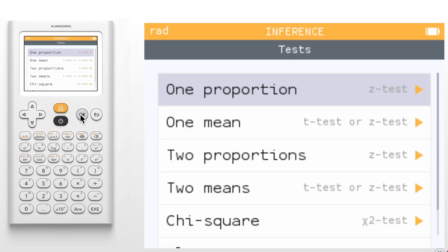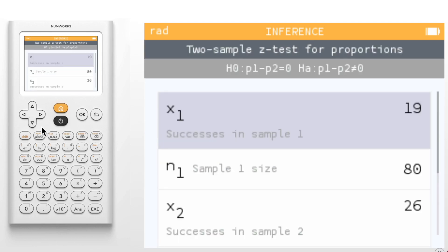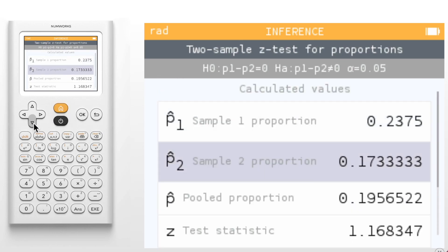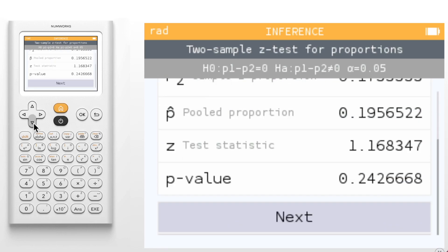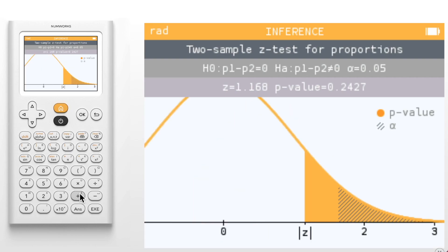We can take a look at this by using the two proportions option. We'll use all the default values for our example. Do notice that we now report the pooled proportion within our calculated values. Then on the final screen, you can see the z test statistic and the p value in yellow, but we now illustrate alpha or the rejection region for easy comparison. And for cases where the two values are very similar, you can use the plus key to zoom in.